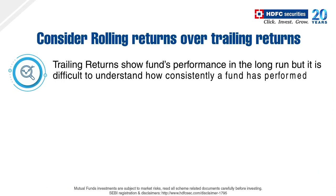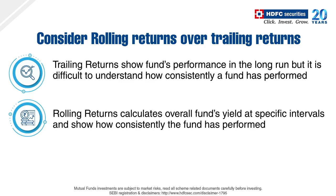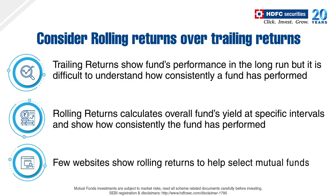While the trailing returns show a fund's performance in the long run, yet from the available data, it can be difficult to understand a fund's return-generating consistency and performance in good and bad market cycles. On the other hand, rolling returns calculates the overall yield of the fund over some time at specific intervals, thus enabling you to choose the best fund in terms of consistency and performance. You can find a few websites that show rolling returns as well.